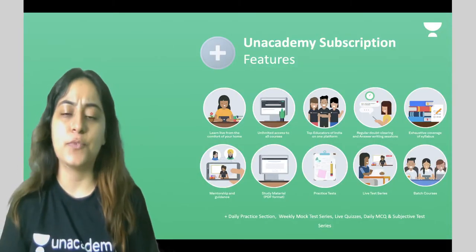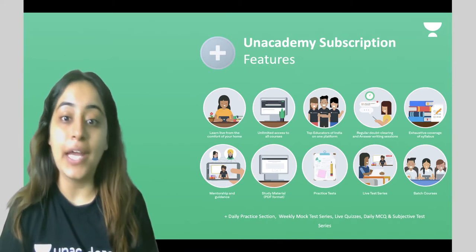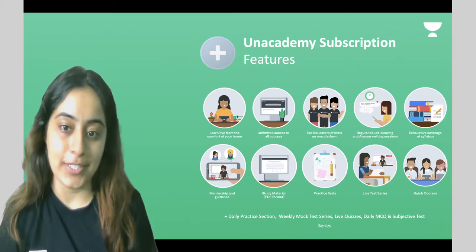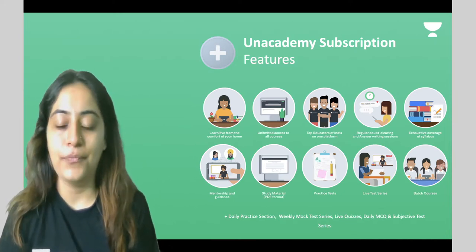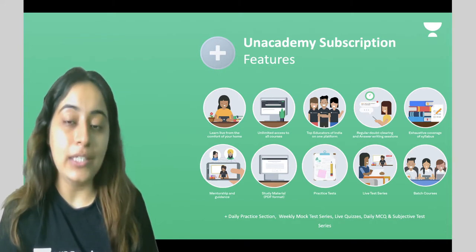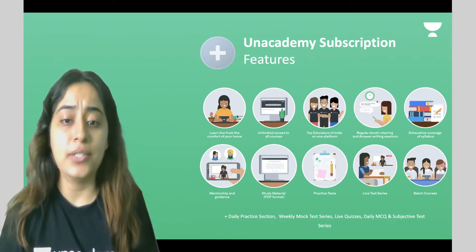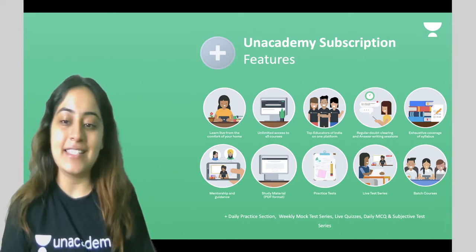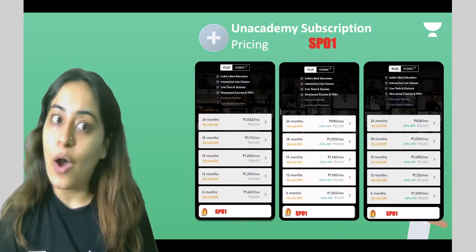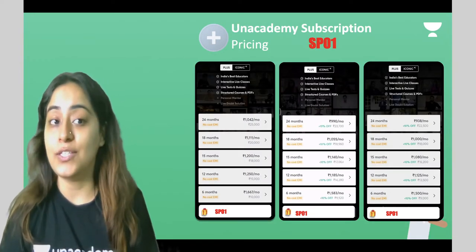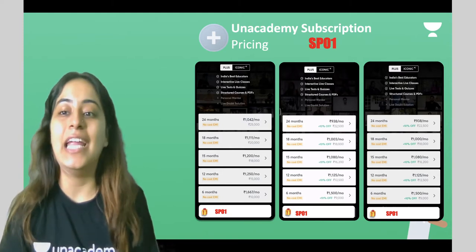With the Unacademy subscription you can learn live from the comfort of your home. You get unlimited access to all courses, taught by top educators on one platform. You get regular doubt solving, doubt clearing and answer writing sessions, exhaustive syllabus coverage, mentorship guidance, study material, practice tests, and so much more. For 24 months, if you were earlier paying 142 per month, with my code SP01 you will now just be paying 938 per month.